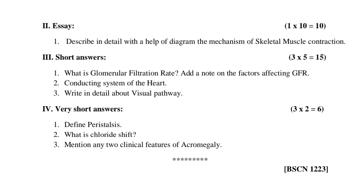Roman numeral IV: Very short answers — three questions, each carrying 2 marks, 3 into 2 equals 6 marks. First question: Define peristalsis. Second question: What is chloride shift? Third question: Mention any two clinical features of acromegaly.